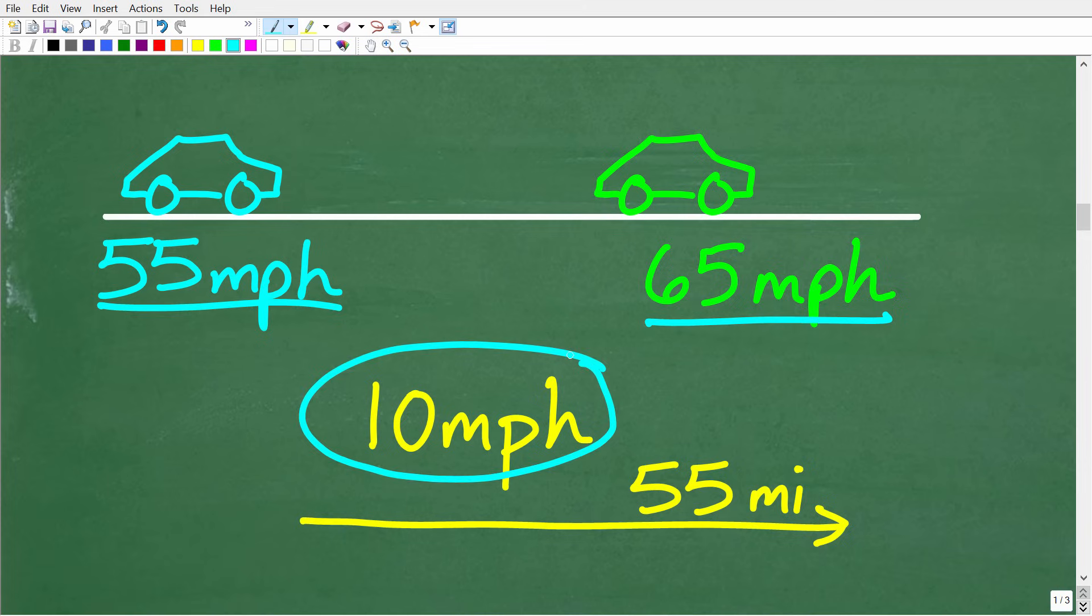So we can kind of simplify this problem down to how long is it going to take? Let's just think about this 10 miles per hour in terms of a car. So we kind of think of it this way. How long will it take a car going 10 miles per hour to travel 55 miles? So, effectively, this is going to be the key to figuring this out. And hopefully some of you saw that pretty quickly. The relative difference here is 10 miles per hour. So how can we solve this problem?